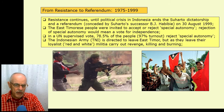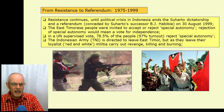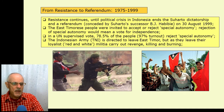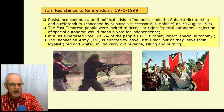Resistance continued all that period — 24 years of Indonesian occupation — until the political crisis in Indonesia ended the Suharto dictatorship. A referendum conceded by Suharto's successor Habibie took place on the 30th of August 1999, supervised by a United Nations body. The East Timorese people were invited to accept or reject special autonomy, and rejection was understood to mean a vote for independence. There was a very big turnout of 97%, and 78.5% rejected special autonomy — clearly a vote for independence.